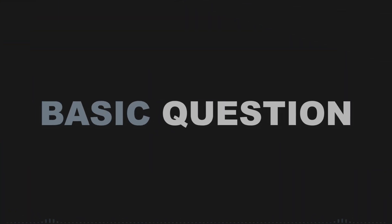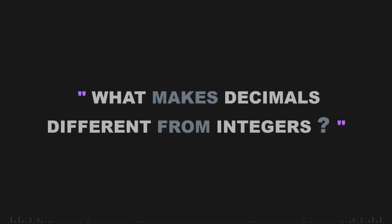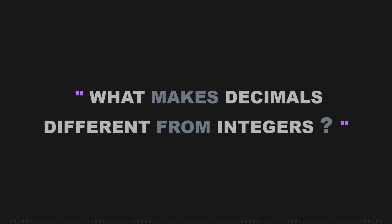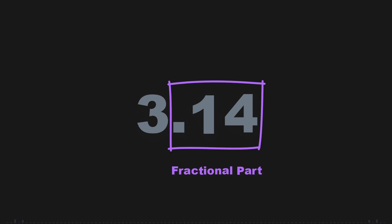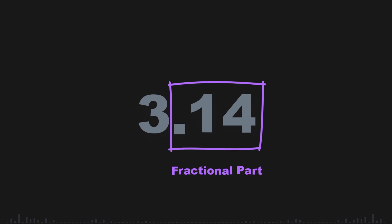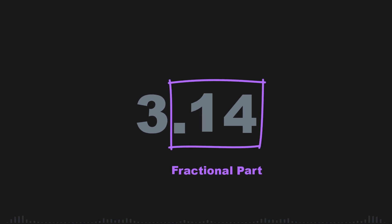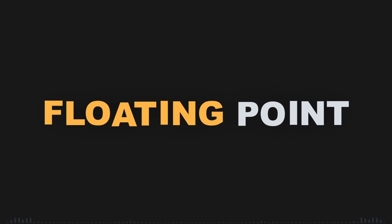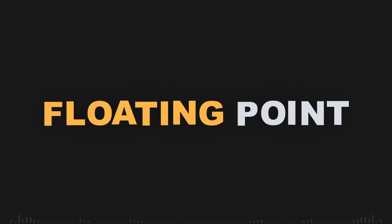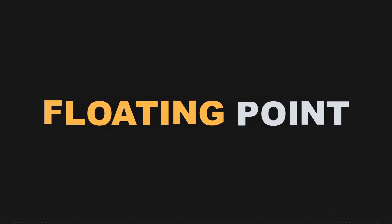Let's start with a basic question: what makes decimals different from integers? Unlike whole numbers, decimals have fractional parts, which makes them harder to represent directly in binary. To store these numbers, computers use a method called floating-point representation. But before we dive into floating point, let's connect this to something familiar.